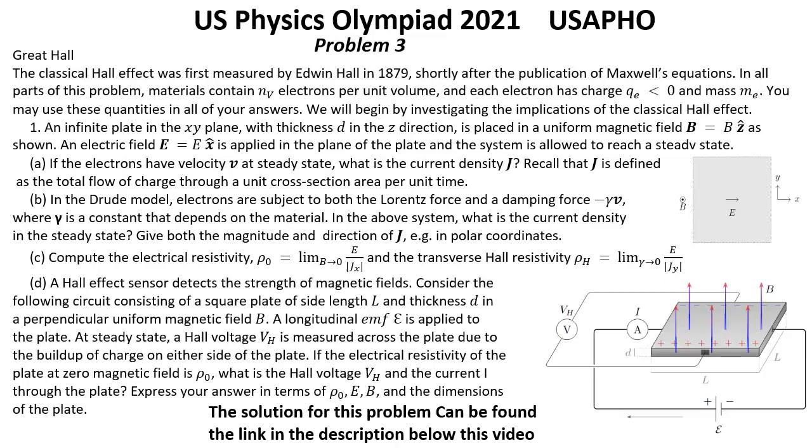Question C: Compute the electrical resistivity rho 0 equals limit for B going to 0 of E over absolute value Jx, and the transverse Hall resistivity rho h equals limit for gamma going to 0 of E over absolute value Jy.